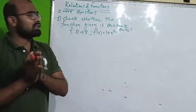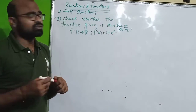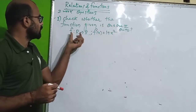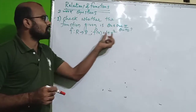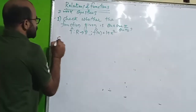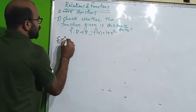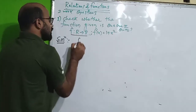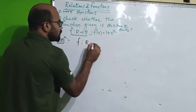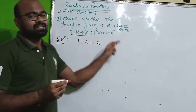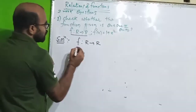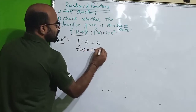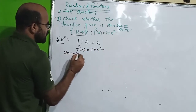Hello dear students. Relation and function - two more questions. First question: check whether the function f is one-one or onto, where f maps from R to R and f of x is equal to 1 plus x squared. So f maps from R to R, and f of x is equal to 1 plus x squared. Now we do the one-to-one check.